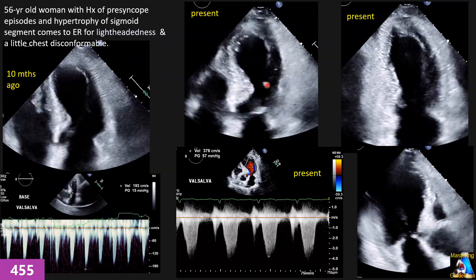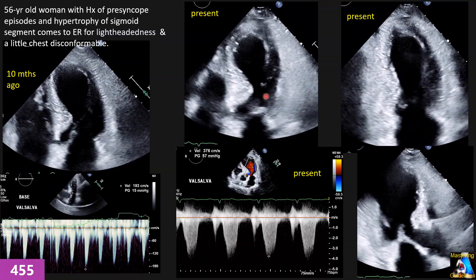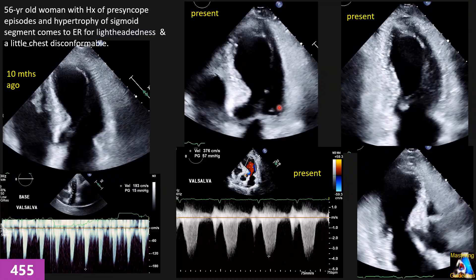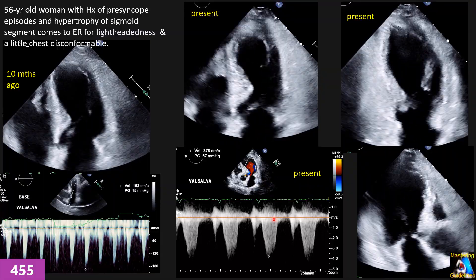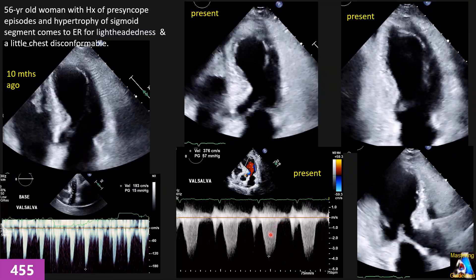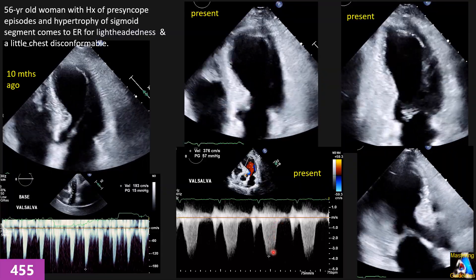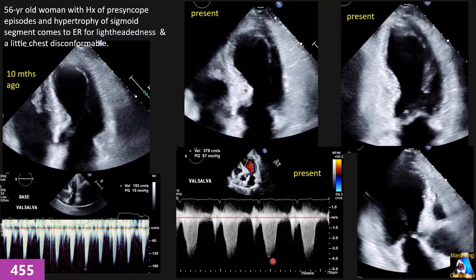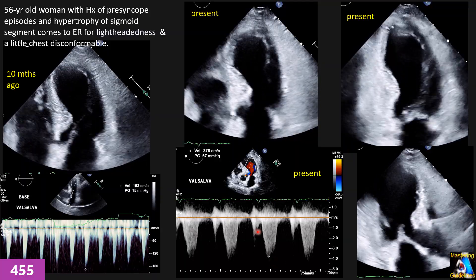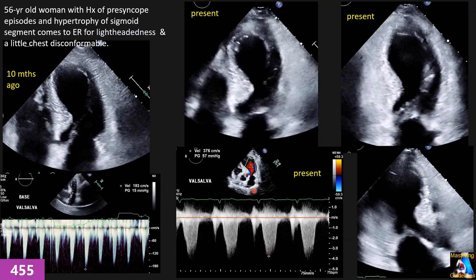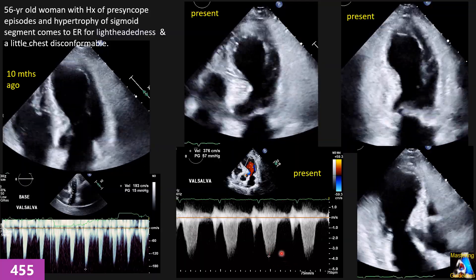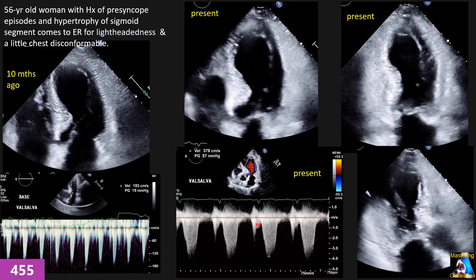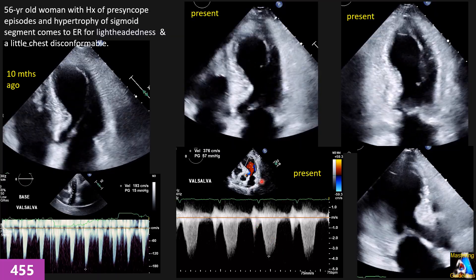Based on the findings, we did the Valsalva maneuver. As you can see, the pressure gradient on LVOT increased to almost 4 meters per second — more accurately, 3.8 meters per second.